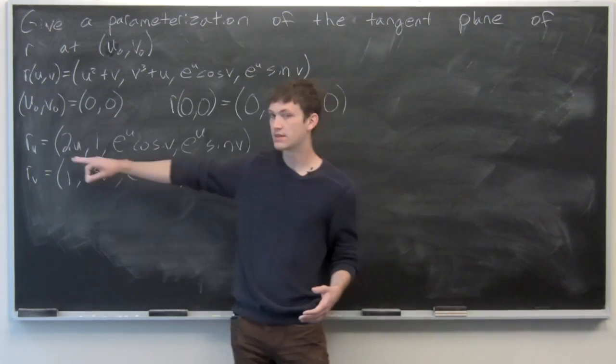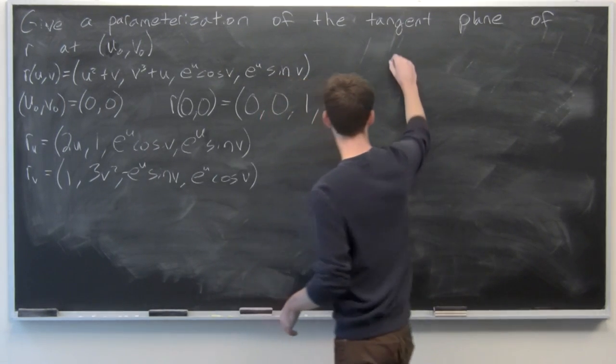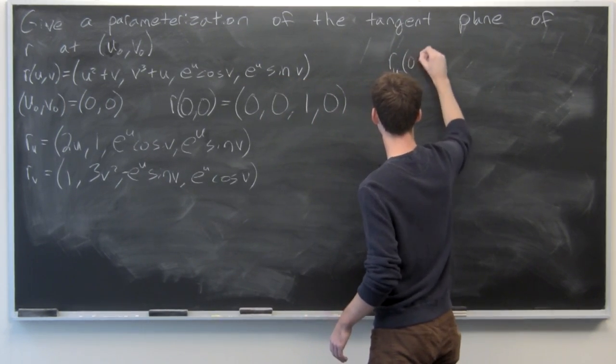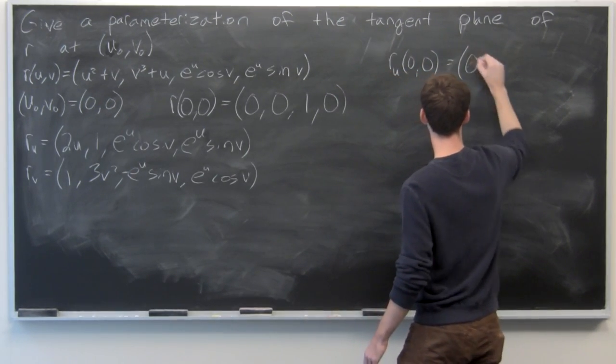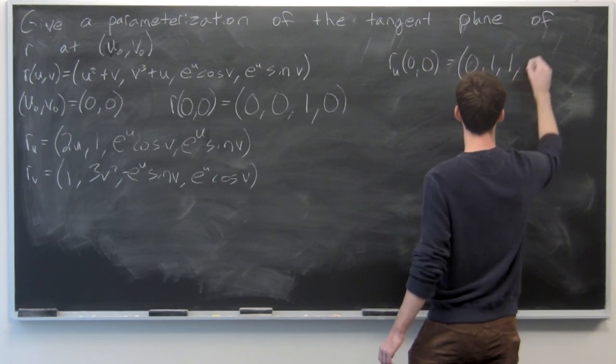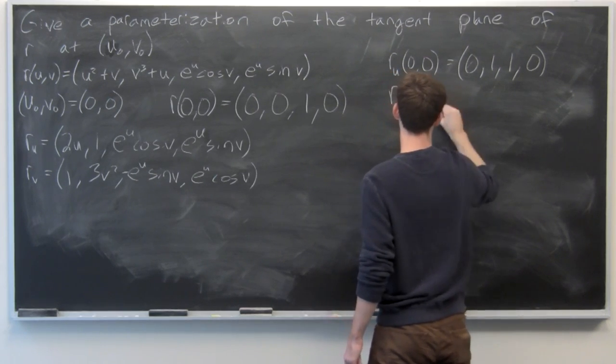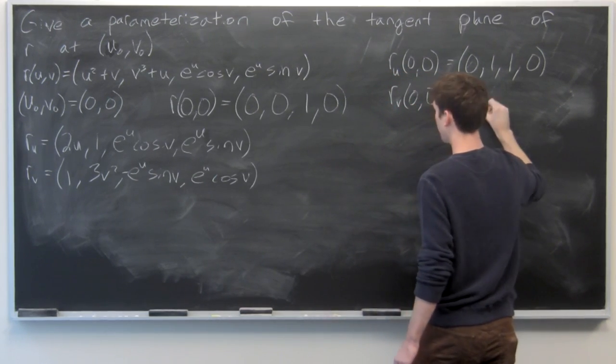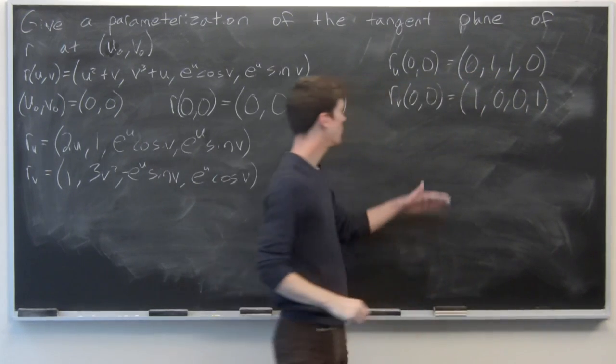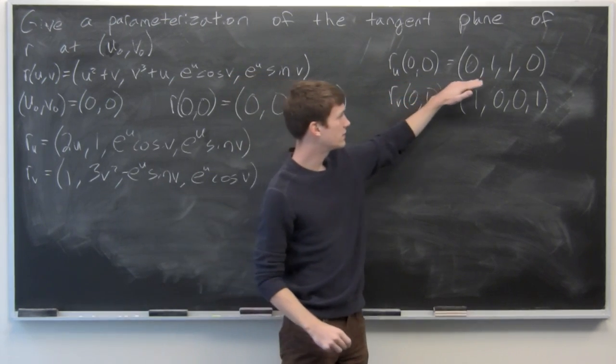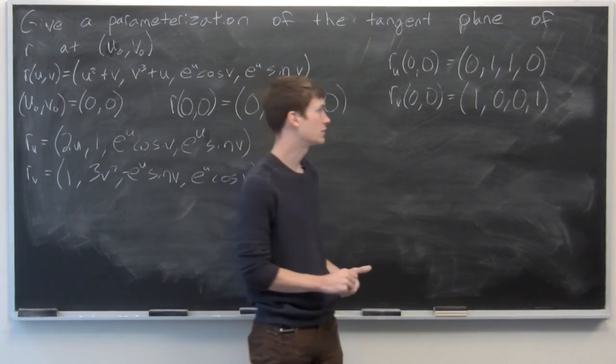We'll evaluate these at the point (u,v) = (0,0). We get rᵤ(0,0) = (0, 1, 1, 0) and rᵥ(0,0) = (1, 0, 0, 1).